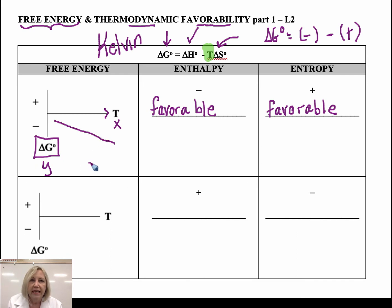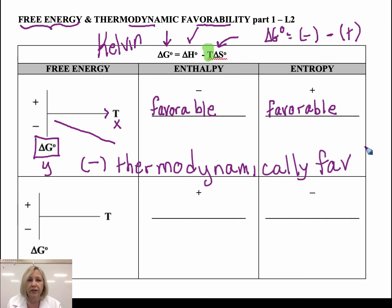That means delta G would be negative for what we call a thermodynamically favorable process. That means that at equilibrium products would be favored. And I want you to notice here, as I said before, as we increase temperature, it becomes more and more favorable or negative because we are magnifying that favorable entropy here. So the increase in temperature magnified the favorable entropy.